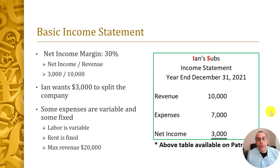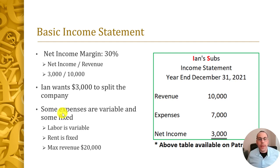Ian says it's a great investment — if he increases net income $1,000 a year you'll make your money back in a few years, and maybe he'll double it to $6,000 or even $10,000 next year. You're definitely interested but need more information. You ask Ian to at least tell you his variable and fixed costs. He asks what that means — variable costs are labor, your employees; fixed costs are things like rent. Ian says his rent goes up every year, so it's a variable cost.